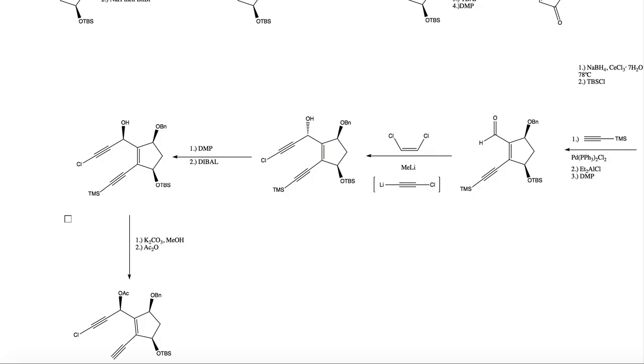So to fix this and to get the desired stereoselectivity, they then reduced this back to a ketone with, again, Dess-Martin oxidation, and then selective reduction with Dibal to give the desired stereoselectivity, or desired stereocenter.